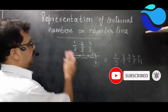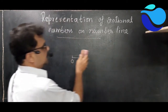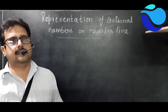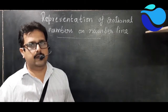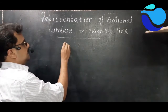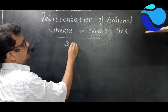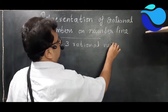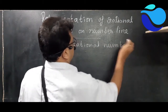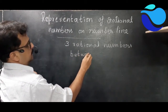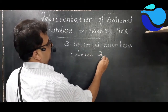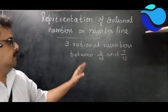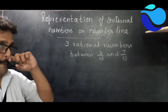In this chapter you will be asked to find two, three, four, or ten numbers between two rational numbers. How can you find them? Suppose you are asked to find three rational numbers between three by ten and seven by ten.